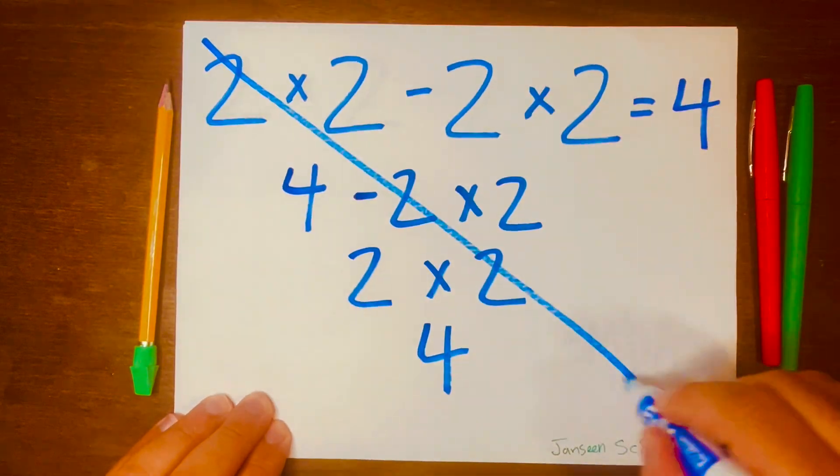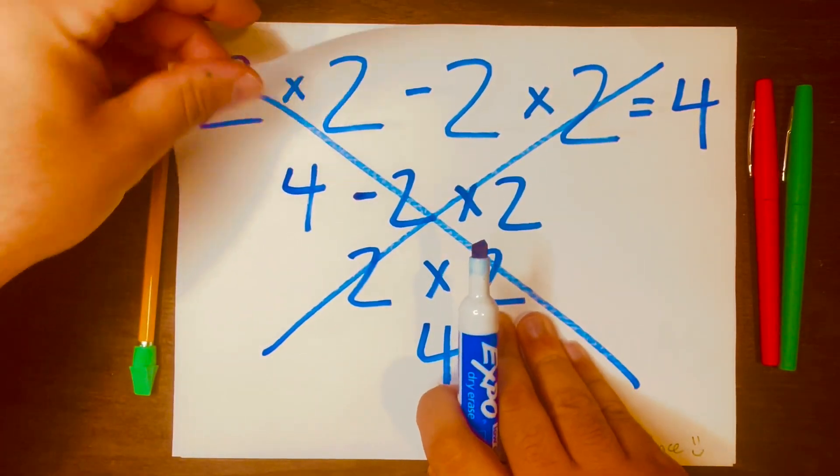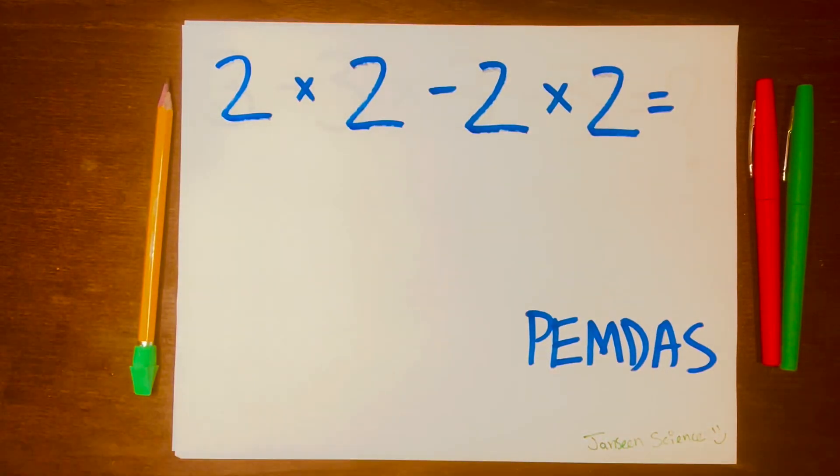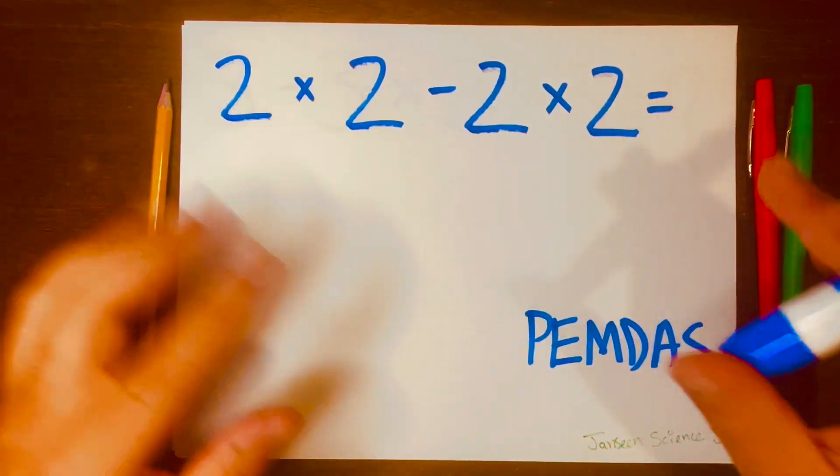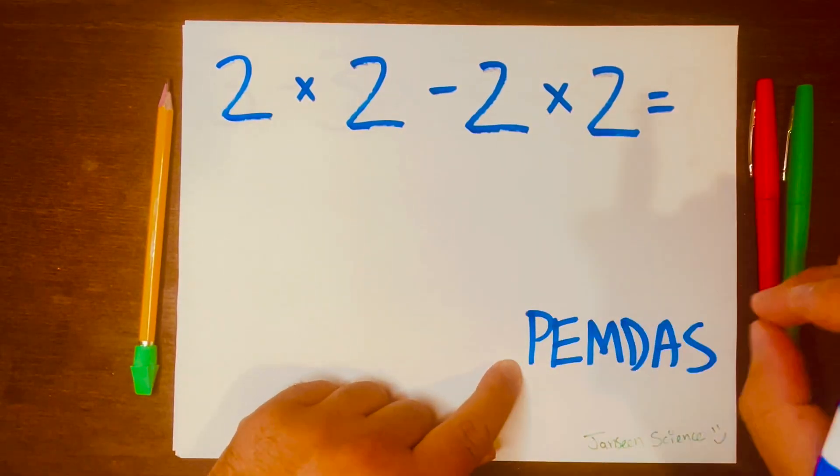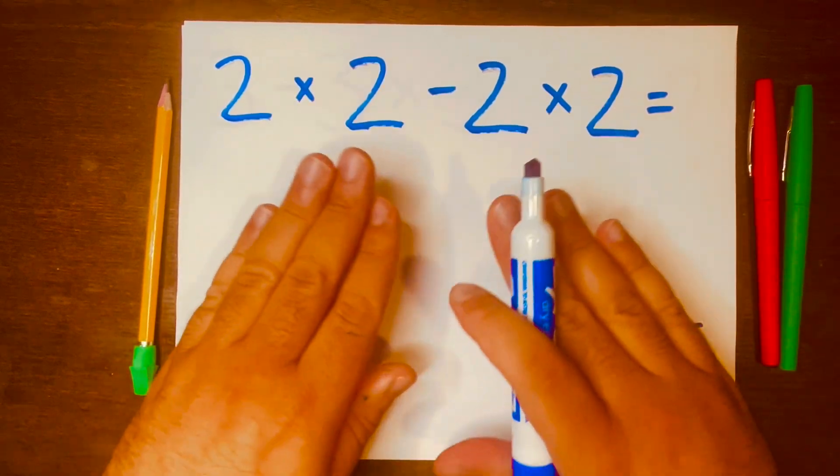Now this is incorrect, and the reason why it's incorrect is because it's not following the PEMDAS rule. If you forgot what PEMDAS is, PEMDAS is just an acronym that will help you remember the order of operations to solve a problem like this.